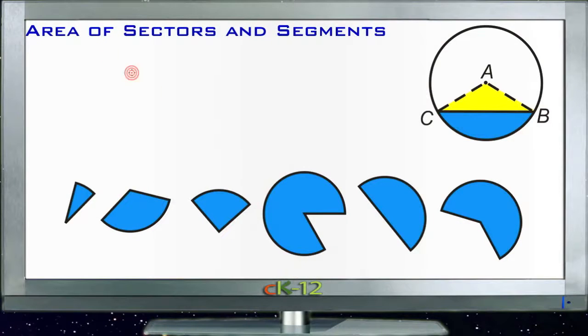All right, our last lesson here is the area of sectors and segments. A sector is a portion of a circle that's all filled in, kind of like a pie slice. Each of these is an example of a different sector of a circle.